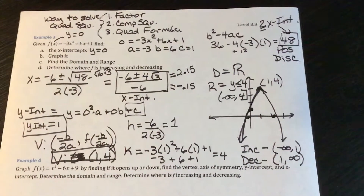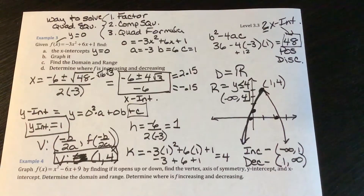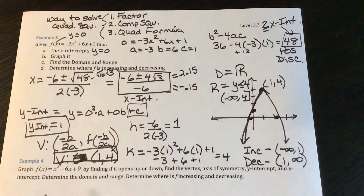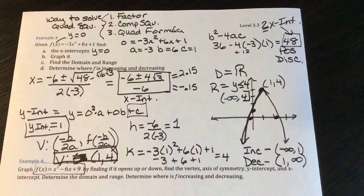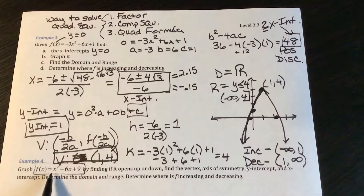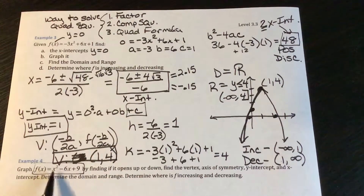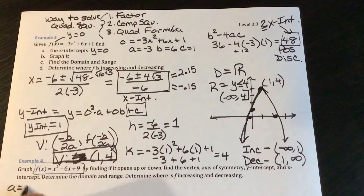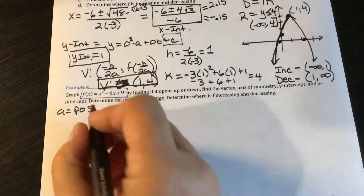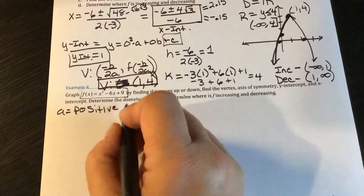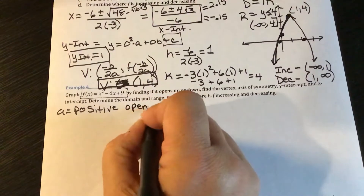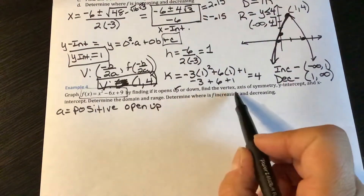Let's do another example. We have f(x) equals x squared minus 6x plus 9, and we want to find out if it opens up or down. The a term always tells us the direction: here a is positive 1, so the parabola opens up.